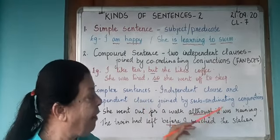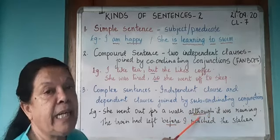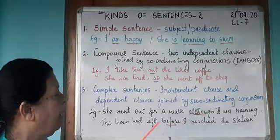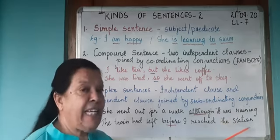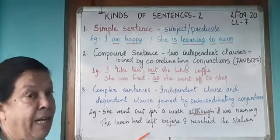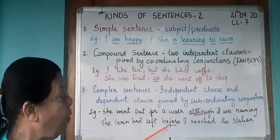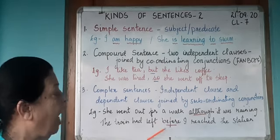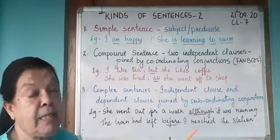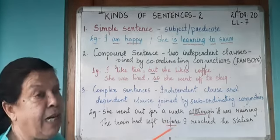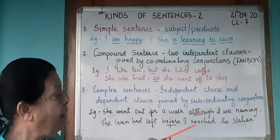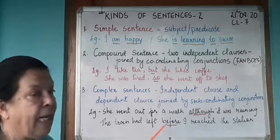Another example: The train had left before I reached the station. We have 'the train had left' — but when? We're not sure. Then we have 'before I reached the station' — 'I reached the station' gives complete sense, but 'before' makes it depend on the main clause. So 'the train had left' is the independent clause, and 'before I reached the station' is the dependent clause, joined by the subordinating conjunction 'before'.